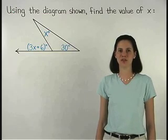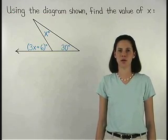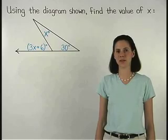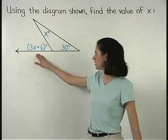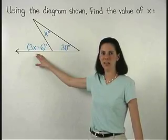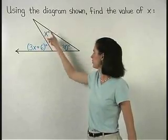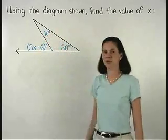To find the value of x in this problem, we use the exterior angle theorem, which states that the measure of the exterior angle of a triangle equals the sum of the measures of the remote interior angles.